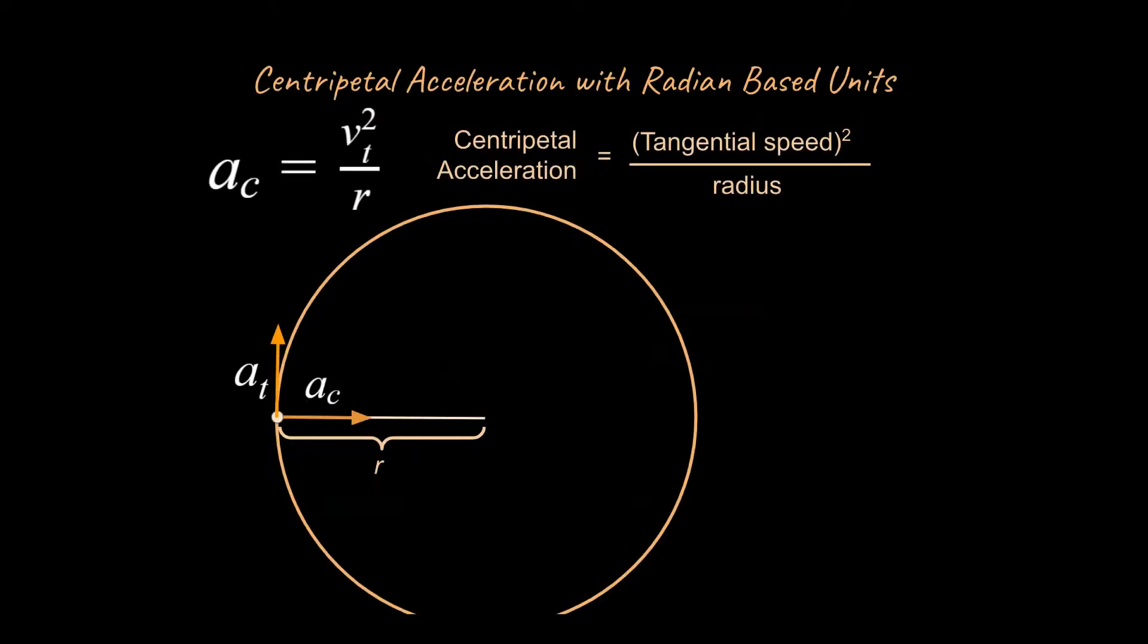All right, now one other thing though that we need to mention is the interplay between centripetal acceleration, which is that center-seeking acceleration over here, and tangential acceleration because there's a special relationship between the two. If you're talking about a circle, this is always pointing towards the center of a circle, this centripetal acceleration, and tangential acceleration is always pointing at a tangent to the circle. So by definition, these accelerations are going to be at right angles to each other.